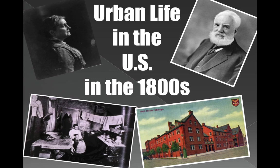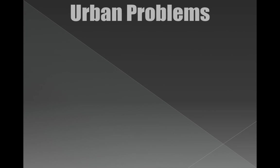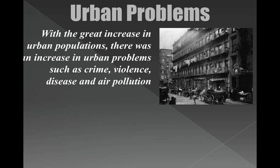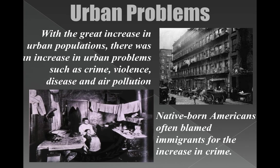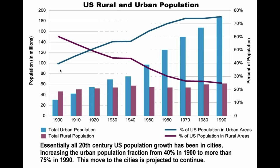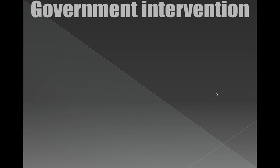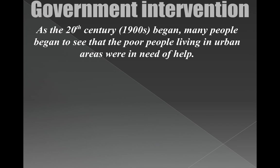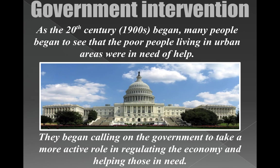The second section talks about urban life — what it's like to live in these cities in the 1800s. Problems with living in cities include crime, violence, disease, and air pollution. Wood fires and no indoor plumbing lead to very poor conditions. Native-born Americans often blamed immigrants for all this crime because they were the ones coming into these cities. As this graph shows, the number of people living in cities goes up as the number living in the countryside goes down. The government began to take a more active role in making things better in cities.